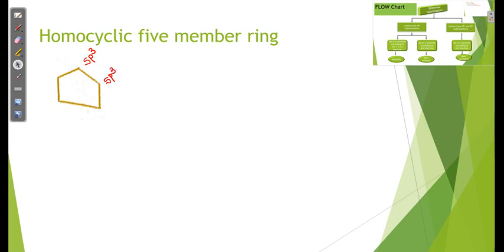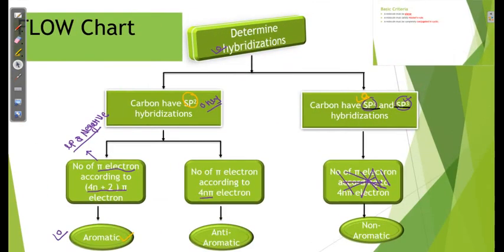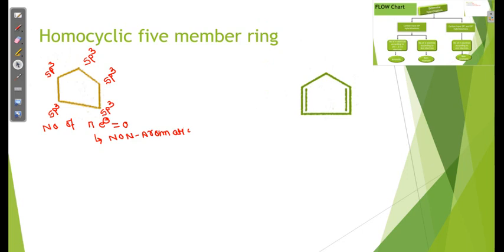For this first example, all carbons have sp3 hybridization. The number of pi electrons equals lone pair plus pi bond electrons, which is zero. The conclusion is that this compound is non-aromatic. We can go back and check the chart — the determination shows sp3 hybridization leads to a non-aromatic compound.